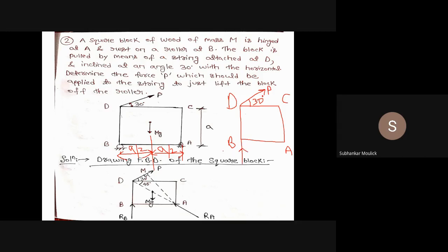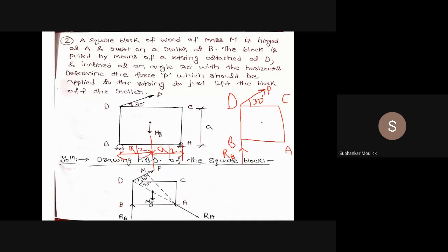Since point B is attached to a roller, the roller will exert an equal and opposite reaction on the square block in the upward direction — that is RB. Since point A is the hinge point, the entire body can rotate about point A. The square has its own weight acting from the center of gravity, that is Mg. The hinge will give an equal and opposite reaction RA to the square plate along its line of action.